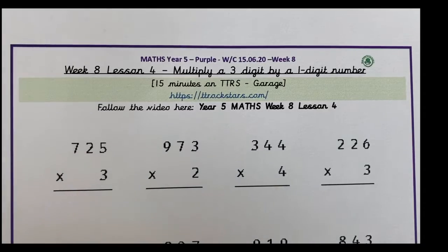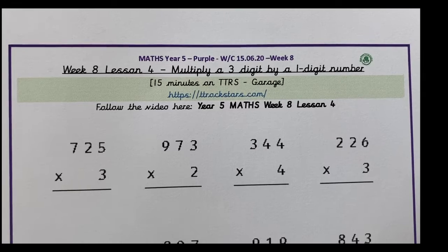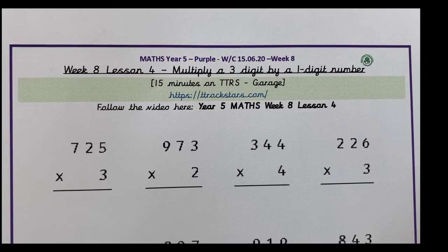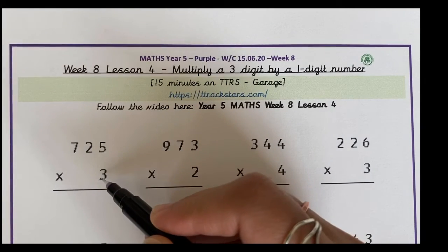Today we are going to multiply a three-digit number by a one-digit number. Here we have 725 times 3.